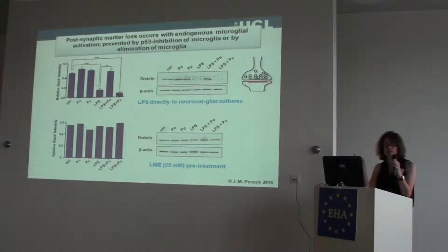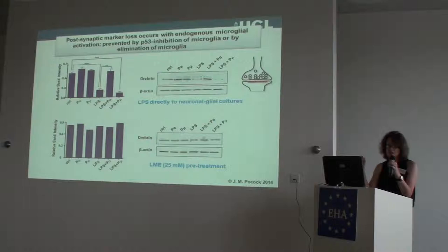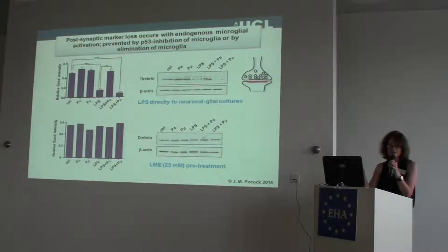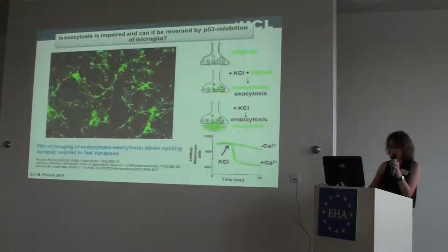If we look at another marker — drebrin, drebrin A in particular — this is also lost in early stages of ageing, and is a positive correlation with ageing and neurodegeneration. This is a post-synaptic marker that's important for spine integrity in the hippocampus and other areas of the brain. We looked at this and saw, in parallel with synaptophysin, that we lose drebrin. Again, if we block P53-mediated pathways in the microglia, we protect and we don't lose these synapses.